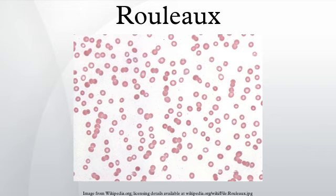Rouleaux are stacks or aggregations of red blood cells which form because of the unique discoid shape of the cells in vertebrates. The flat surface of the discoid cells gives them a large surface area to make contact with and stick to each other, thus forming a Rouleaux.